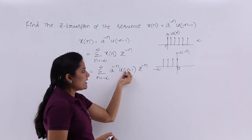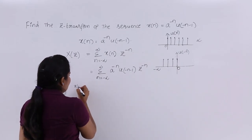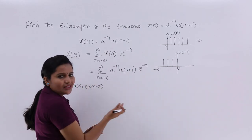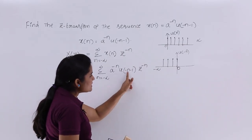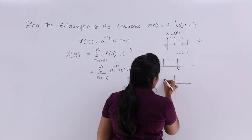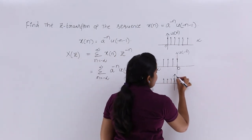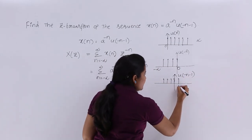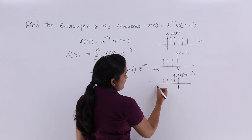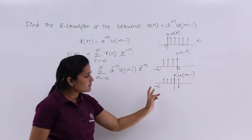For u of minus n, you are having a shift. Here we have minus 1, which is a right shift. For any signal x of n, x of n minus 2 is a right shift, and x of n plus 2 is a left shift. So u of minus n minus 1 is a right-shifted version of u of minus n. This signal is limited on the right side up to n equals 1, and keeps extending to minus infinity on the left — giving 1 from minus infinity up to 1.